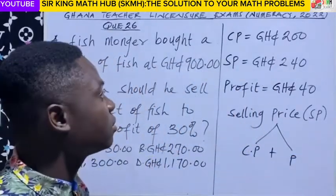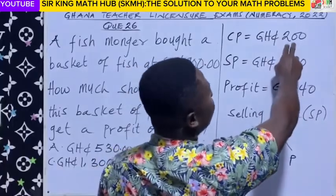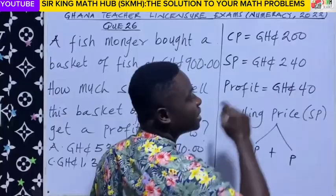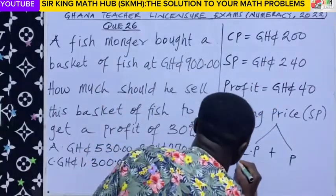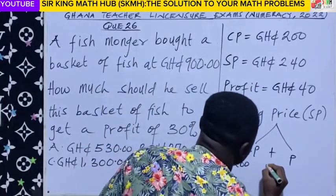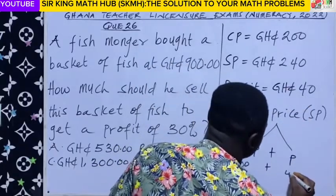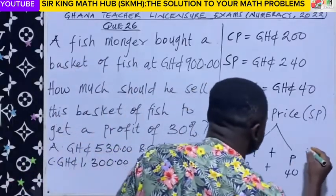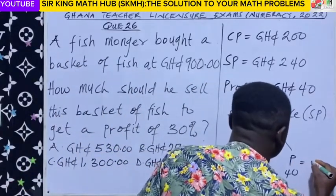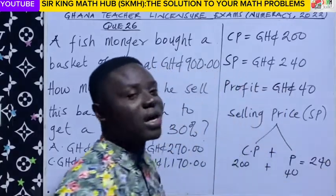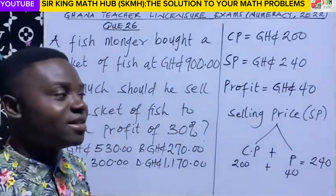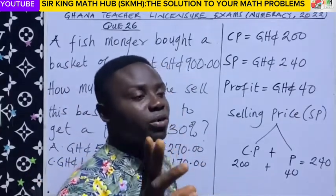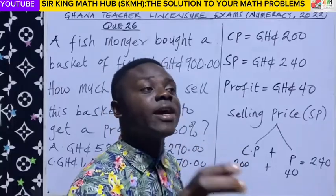Let's verify and see. The cost price of the article was 200 cedis. We made a profit of 40 Ghana cedis. So what is 200 cedis plus 40 Ghana cedis? That gives us 240 Ghana cedis. So that is all I want you to know — the selling price has two components: the cost price and the profit.